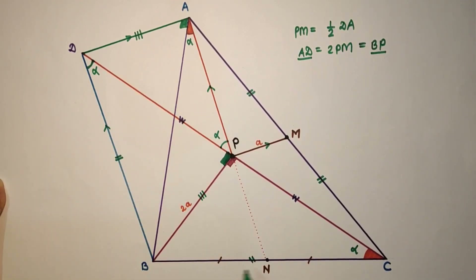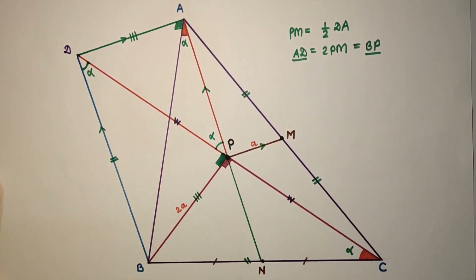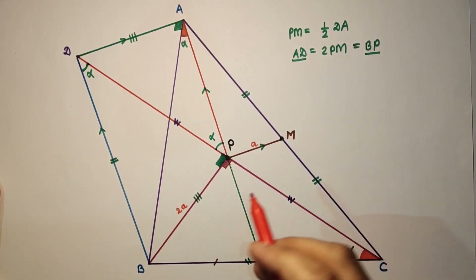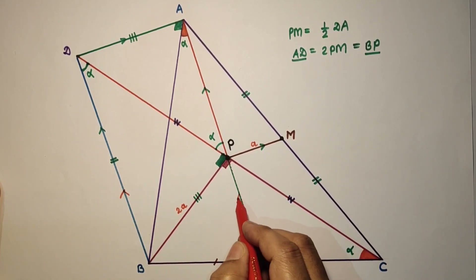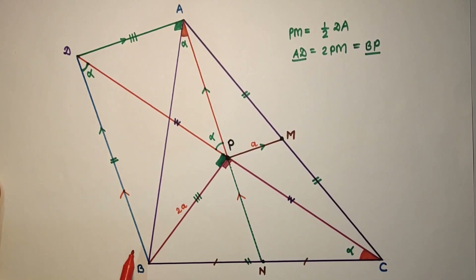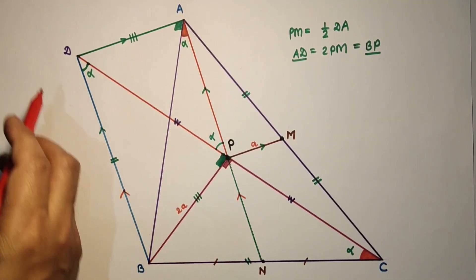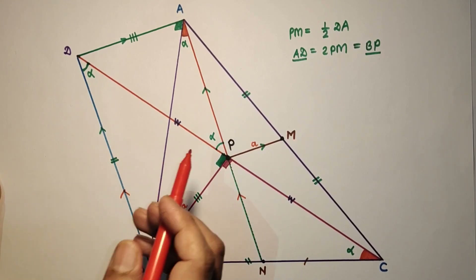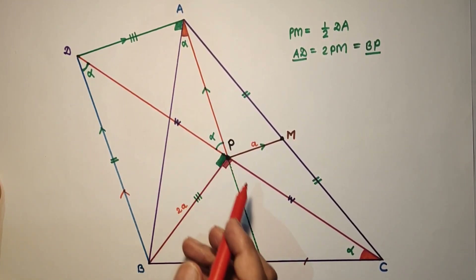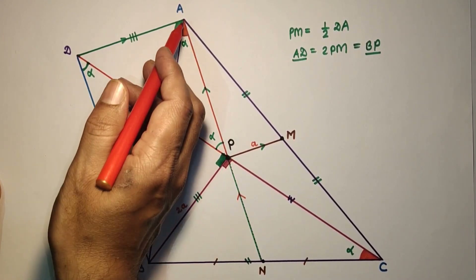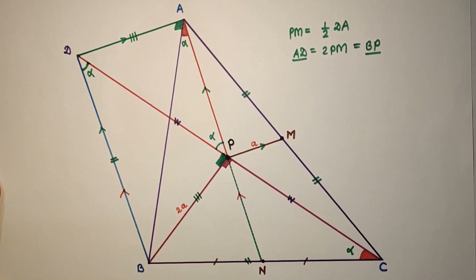Now consider triangle CBD: P is the midpoint of CD and N is the midpoint of BC. By the midpoint theorem, PN is parallel to BD and PN equals half of BD. Since AP is parallel to BD and PN is parallel to BD, with P as the common point, we can say that angle APN is a straight angle of 180 degrees. Hence points A, P and N are collinear. Hence proved.